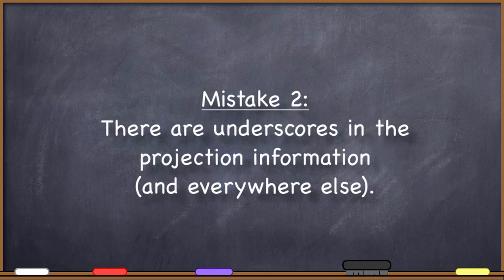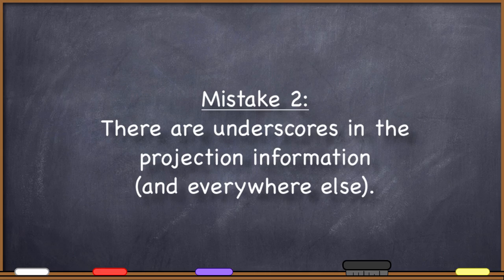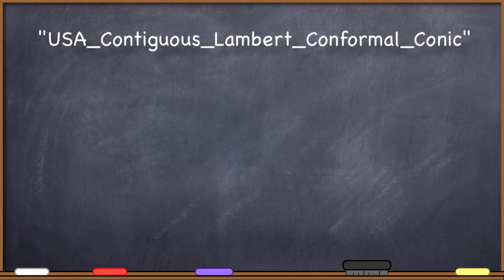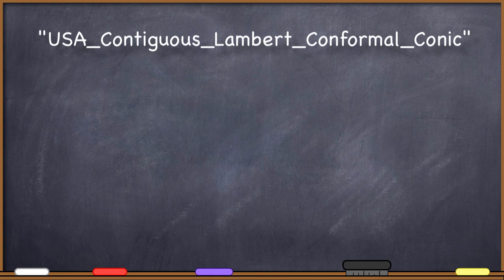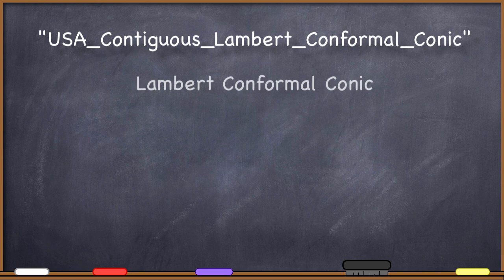Number 2. There are underscores in the projection information and everywhere else. As soon as you see underscores in projection information, coordinate systems, and so forth, you immediately know that the person has simply copied and pasted whatever was found in the properties of a shapefile, feature class, or perhaps the dataframe in ArcGIS. They think that by copying exactly what was there, they are doing a good job by accurately reporting something about the map. But the reality is the underscores are unnecessary.